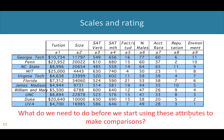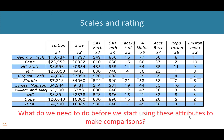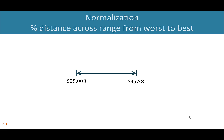Before we can start using these attributes to make comparisons, right now they're all in different units and different scales — you can't just add these up. So a very common first step is to normalize the variables. Looking at the prior screen, tuition for MIT is at $25,000, which is the highest, and the lowest is Virginia Tech at $4,638. On the normalized scale, MIT has a score of zero and Virginia Tech a score of one. Normalization puts raw data on a scale from zero to one, where zero is the worst alternative and one is the best.